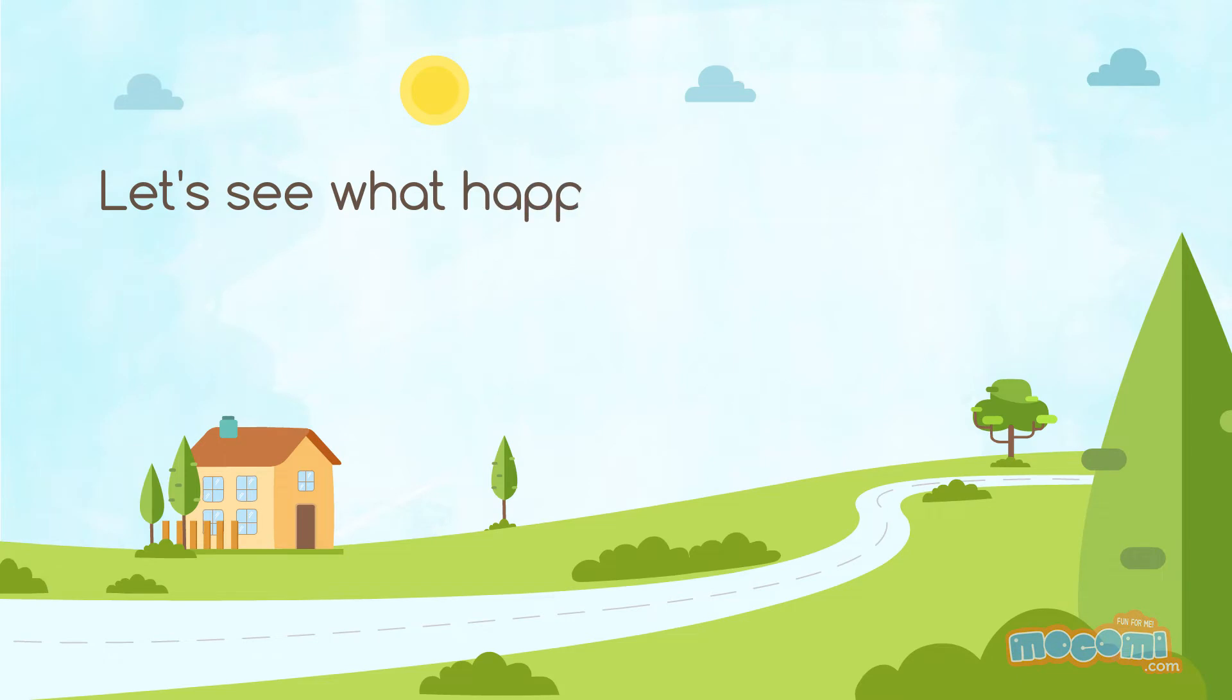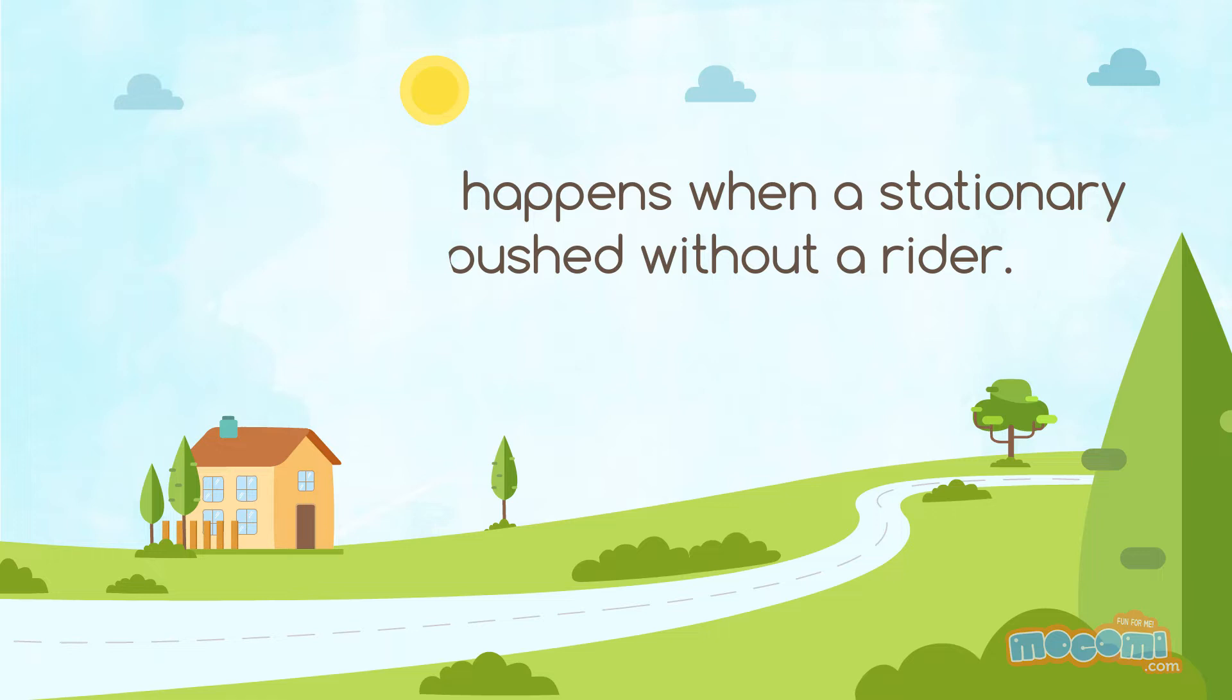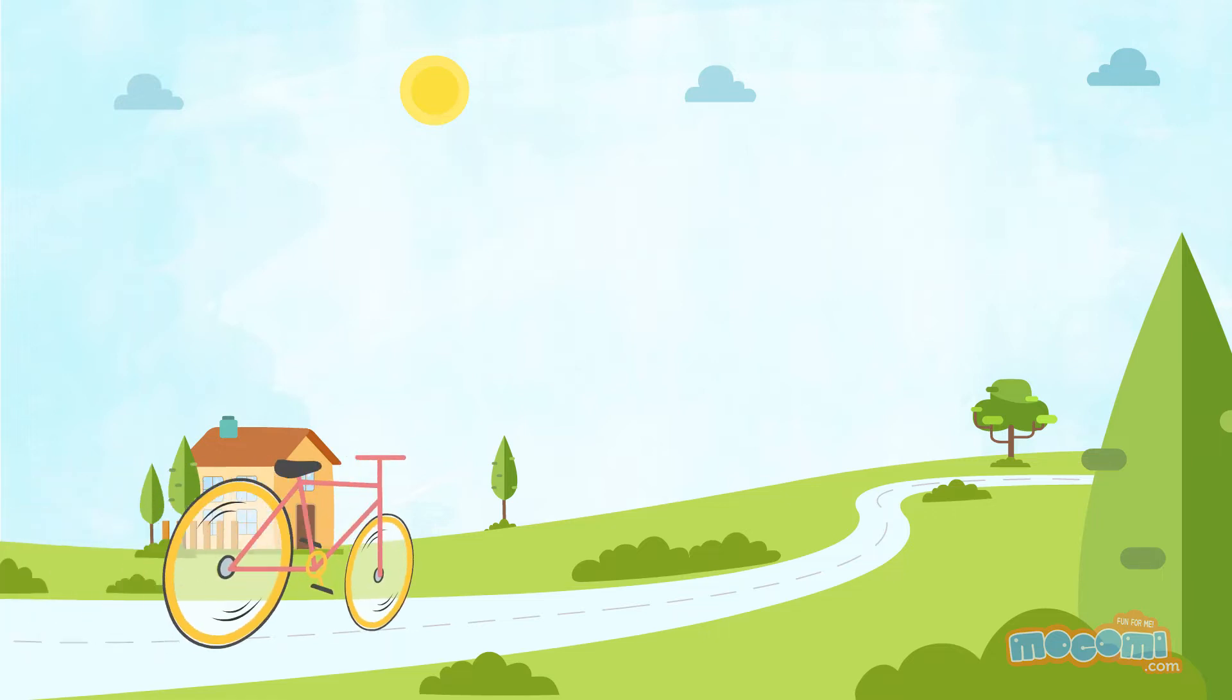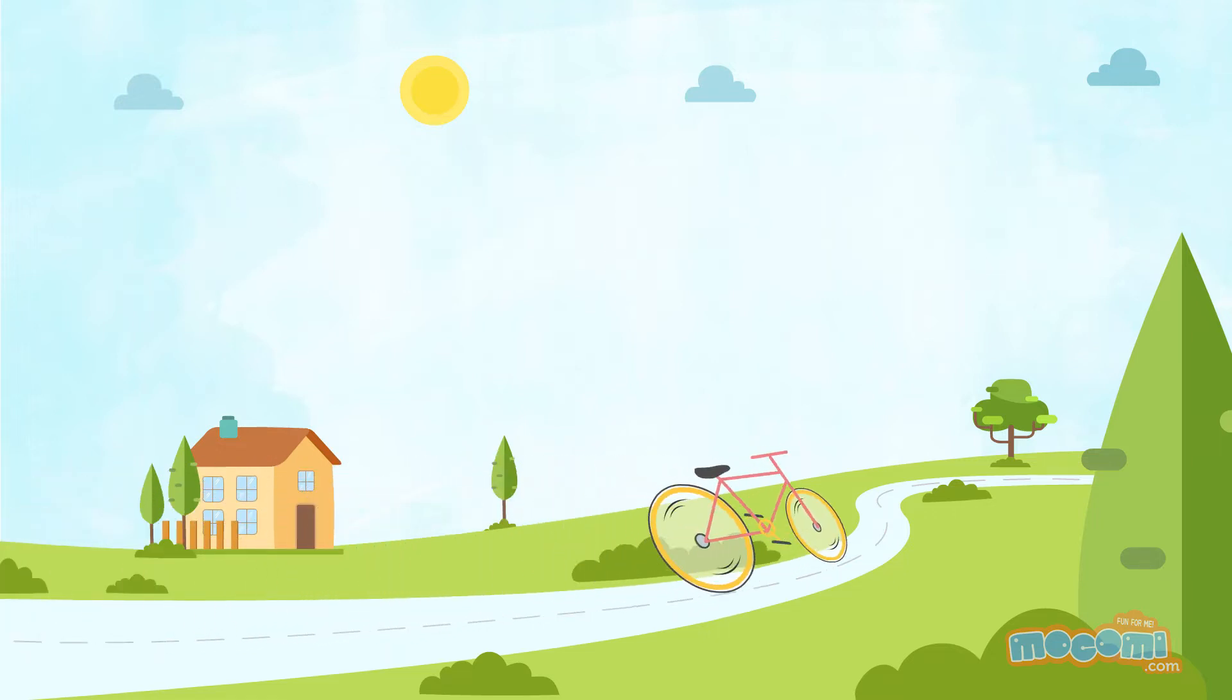Let's see what happens when a stationary bicycle is pushed without a rider. The pushed bicycle keeps moving. It's becoming slower and now it has fallen.